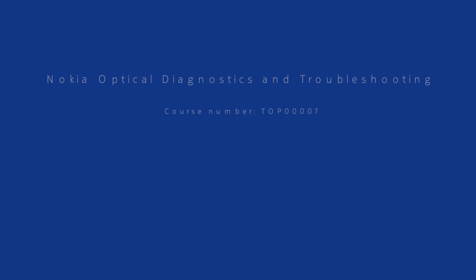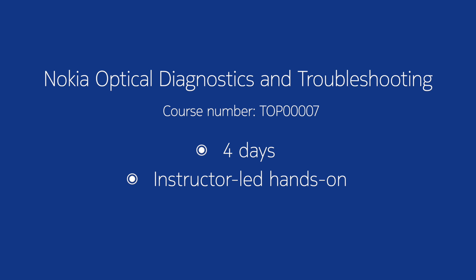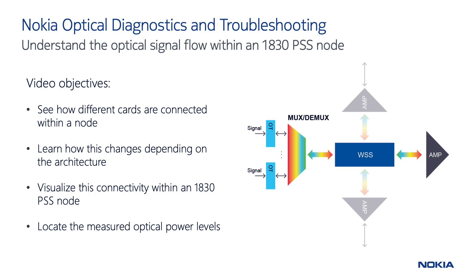This video has been created based on the Nokia Optical Diagnostics and Troubleshooting course. Today, we'll provide an overview of how the optical signal flows within an 1830 PSS network element, showing where the signal starts, how it's processed, and how it can be routed towards the remote nodes. We'll see the optical signal flow in three different node architectures, all based on the reconfigurable OADM, or Rotem.